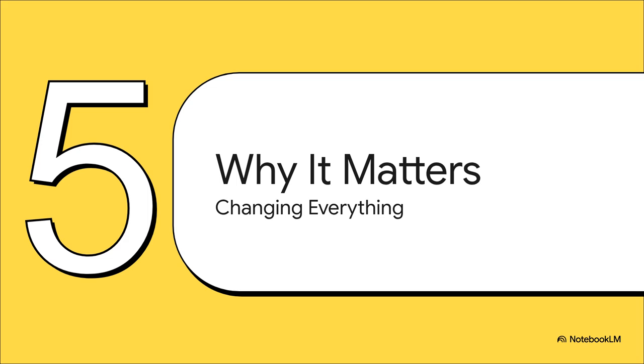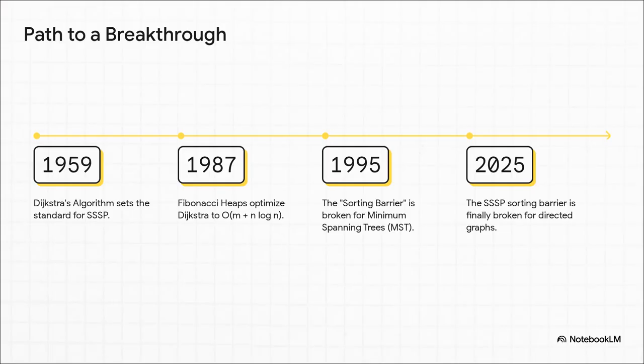Now, this isn't just some tiny tweak for a little more speed. This is a fundamental shift in how we even think about this core problem. So what does this actually mean for the future? A discovery like this never just appears out of thin air. It's a huge moment, sure, but it's built on decades of work. The story starts with Dijkstra setting the bar way back in '59. We saw optimizations in the 80s and then a really hopeful moment in the 90s when this same barrier was broken for a related problem. This 2025 paper, it's the final chapter in that long, long scientific journey.